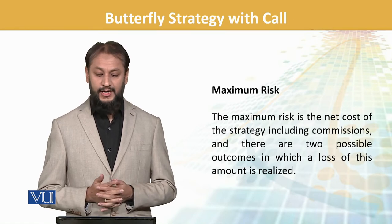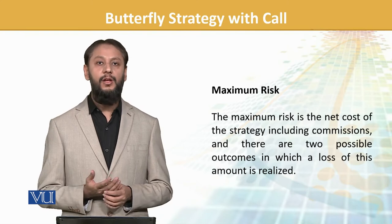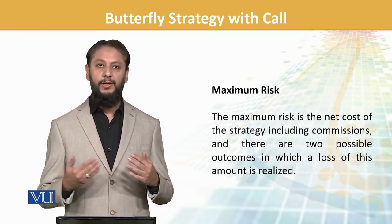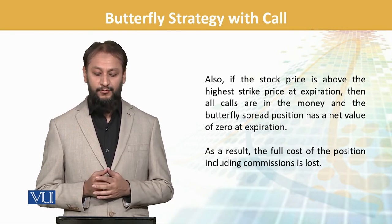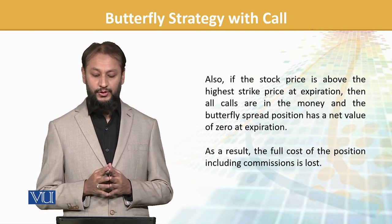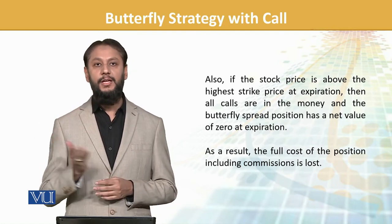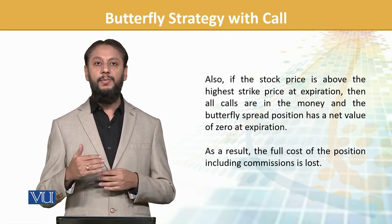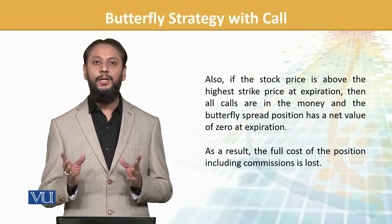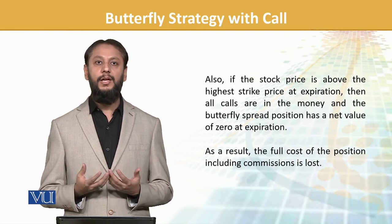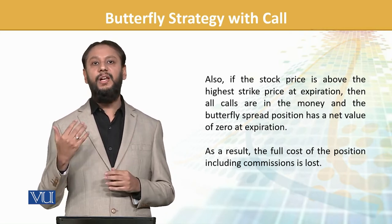Maximum risk kya hai? Maximum risk is the net cost of the strategy including commission. Aur do possible outcomes hain jisme loss realize hota hai. Maximum kitna hoga — jo humne net premium diya hai, woh loss humara ho sakta hai. Woh do situations mein hoga jab extreme level ki movement hogi. Also, if the stock price is above the highest strike price at expiration, then all calls are in the money and the butterfly has a net value of zero at expiration — as a result, full cost of the position including commission is lost. Yani woh transaction koi gain nahin dega, apna premium lose kar rahe honge.